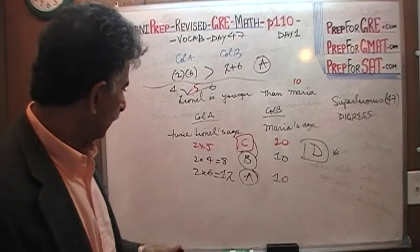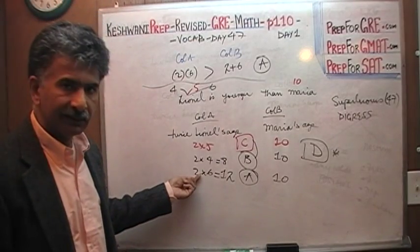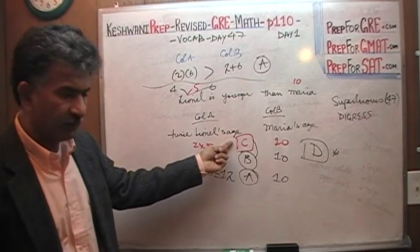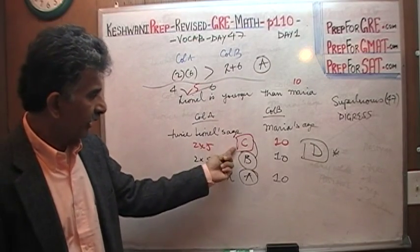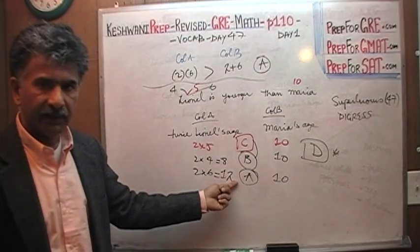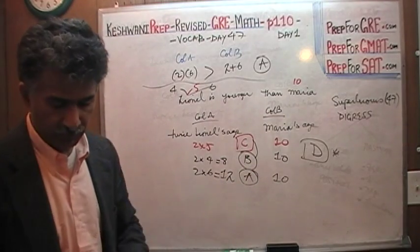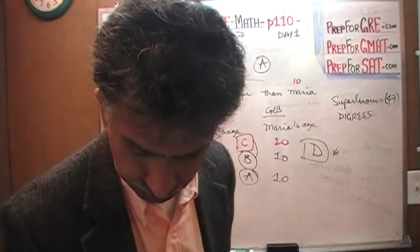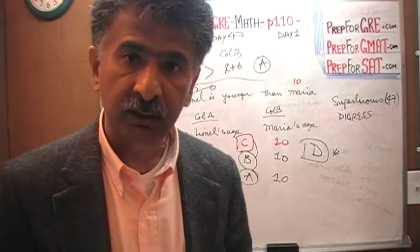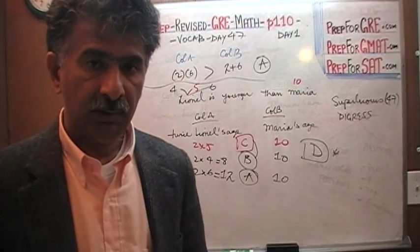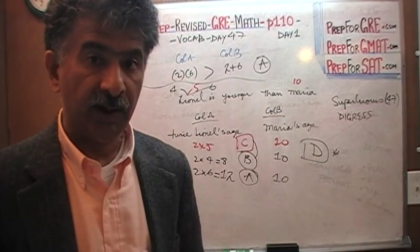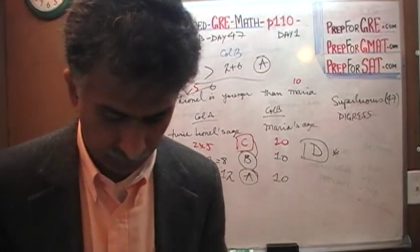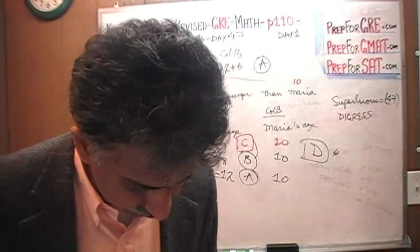If you didn't understand what I just said, the part I just did here—the third scenario—was superfluous, unneeded, uncalled for, unnecessary. We were looking for a conflict. We already found it. The first time the answer was C, the second time was B. Since we have a conflict, the answer is D. Let's do the next problem.